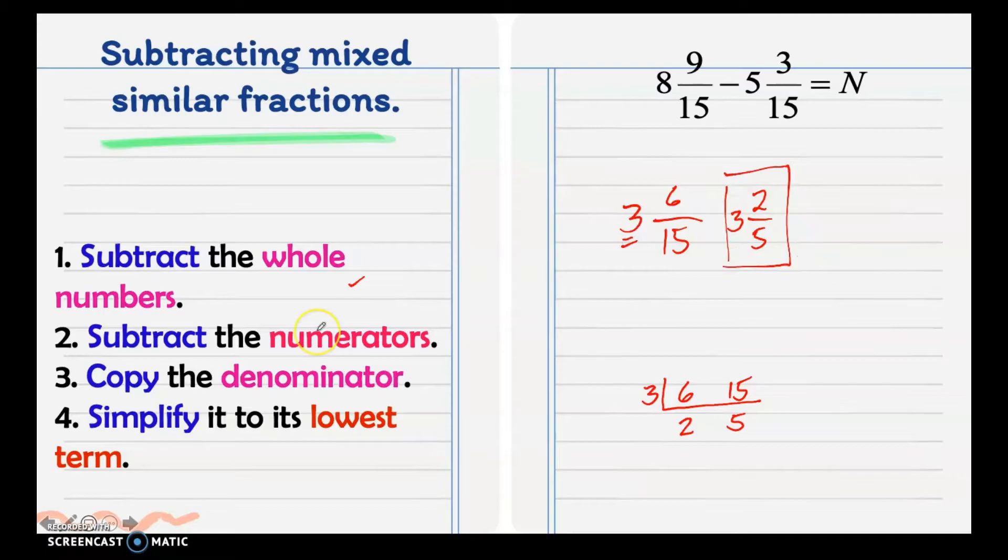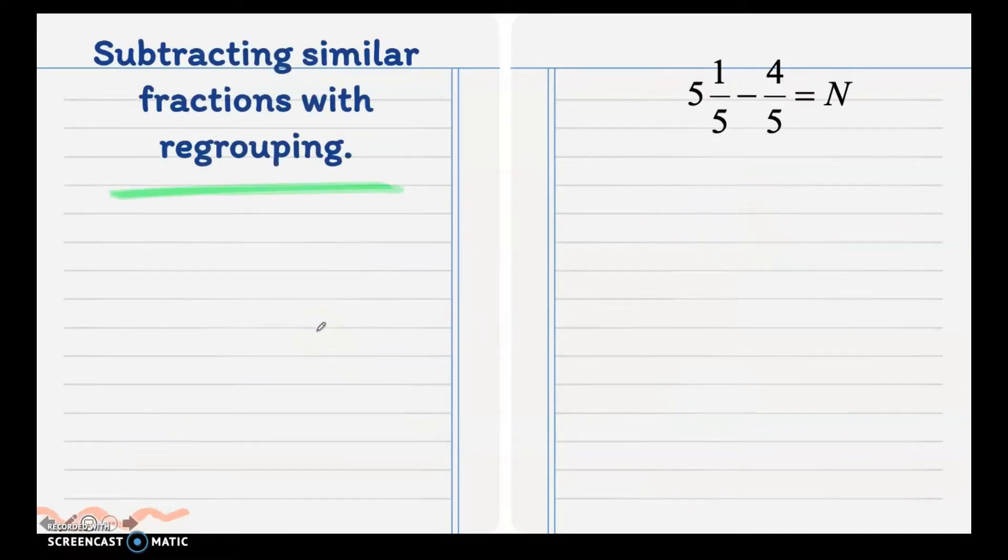Next is subtracting similar fractions with regrouping. We have here 5 and 1/5 minus 4/5. As you can see, you cannot subtract 1 minus 4. This is the time that we need to regroup.